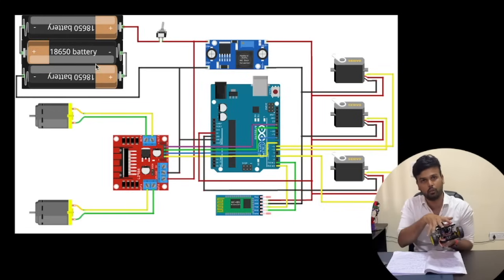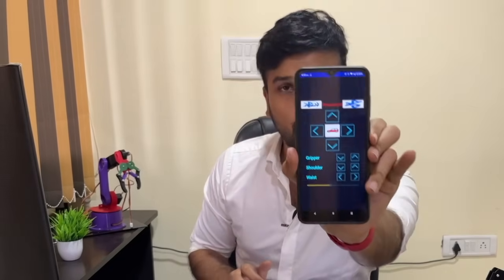So coming to the software side, we need two things. One is an Android application to control our robot and the other one is the Arduino code. Now for the Android application we have built this one using the MIT App Inventor. It is just a very simple app with few buttons which can be used to control the robotic car as well as the gripper. I will also show you how it is done on MIT App Inventor.